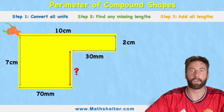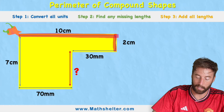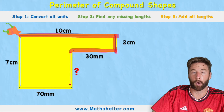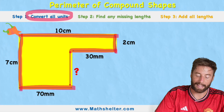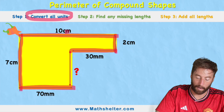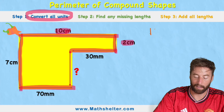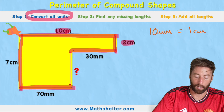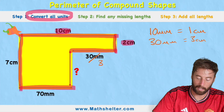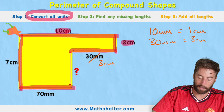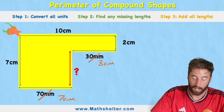Now let's look at the orange chili challenge. There's a missing value marked with a question mark. We have 10 centimeters at the top, 2 centimeters, 30 millimeters, the unknown gap, 70 millimeters, and 7 centimeters. Let's convert everything to centimeters. 10 millimeters equals 1 centimeter, so 30 millimeters equals 3 centimeters, and 70 millimeters equals 7 centimeters. Now all units are in centimeters.